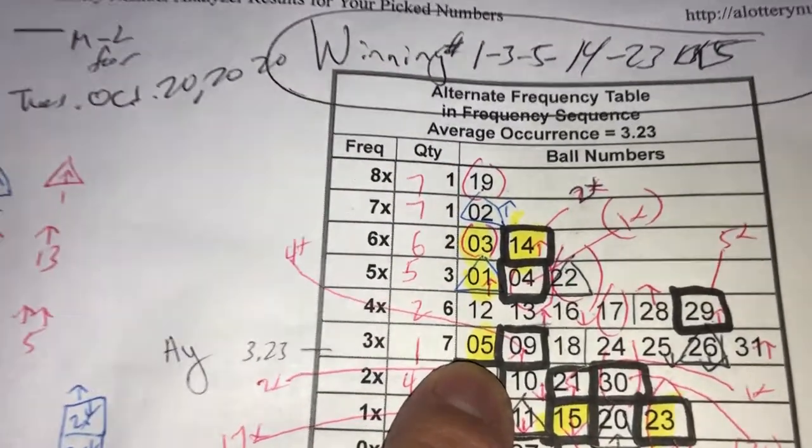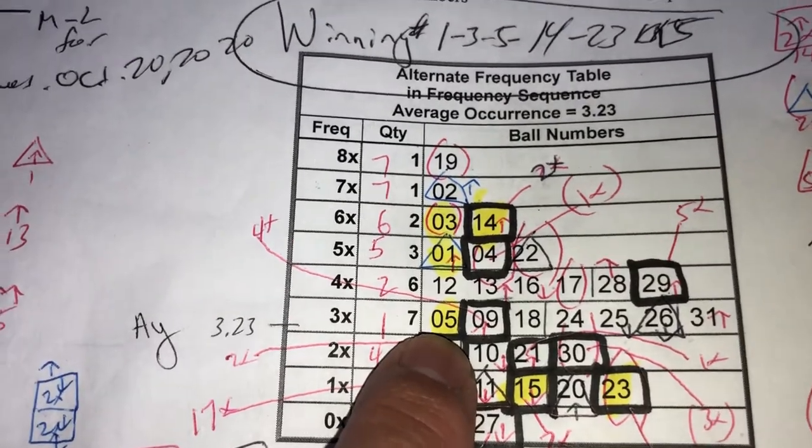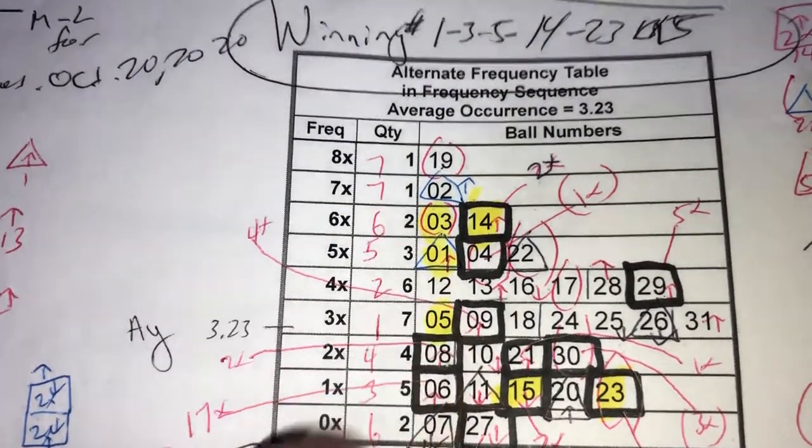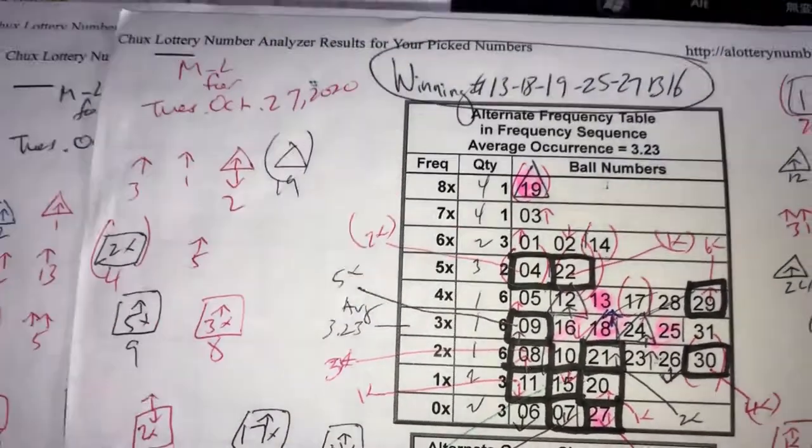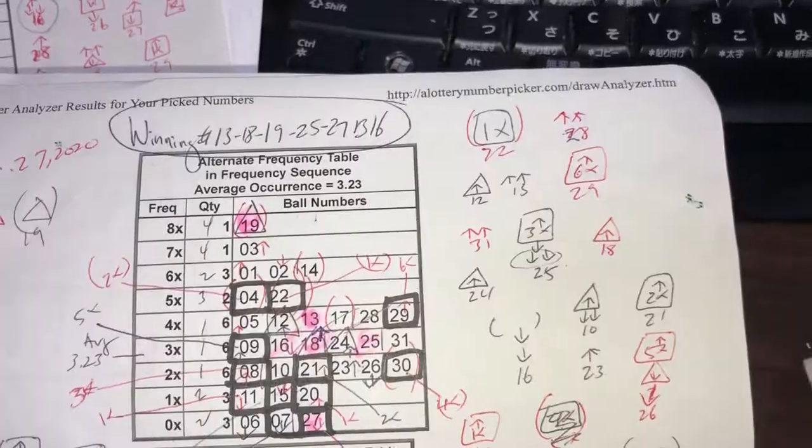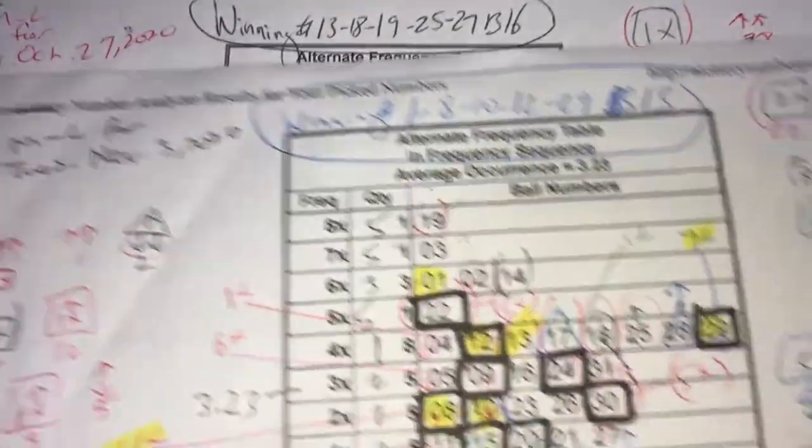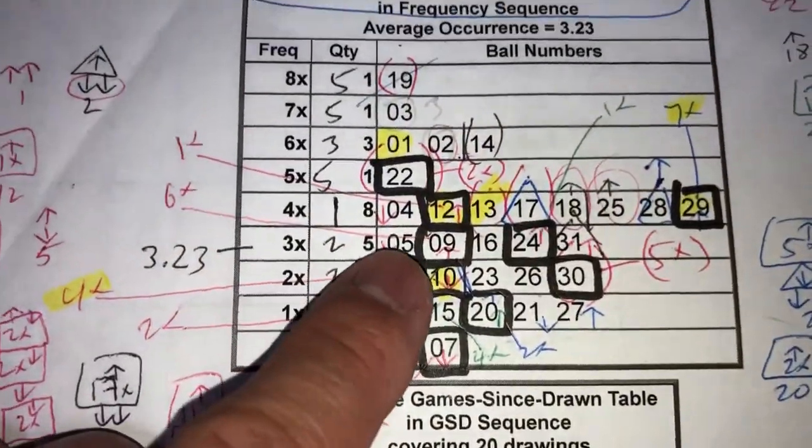So on October 20th, number five hit. That means it goes to 4x. Let's see the pattern. It goes up to 4x once on October 27th, then on November 3rd it flips down to 3x.